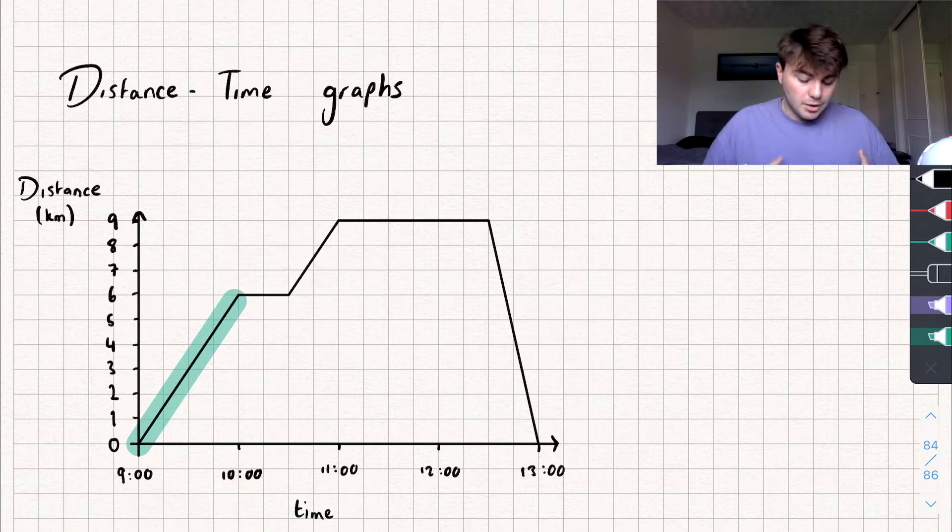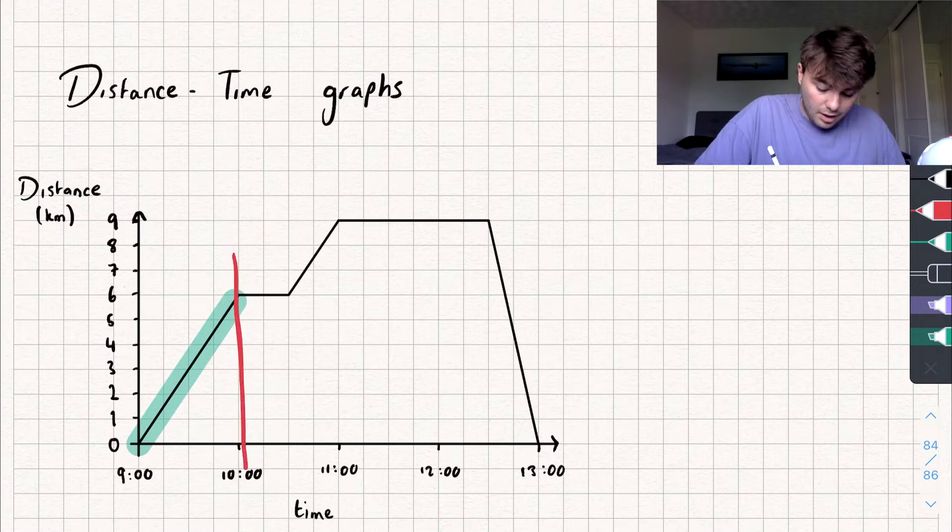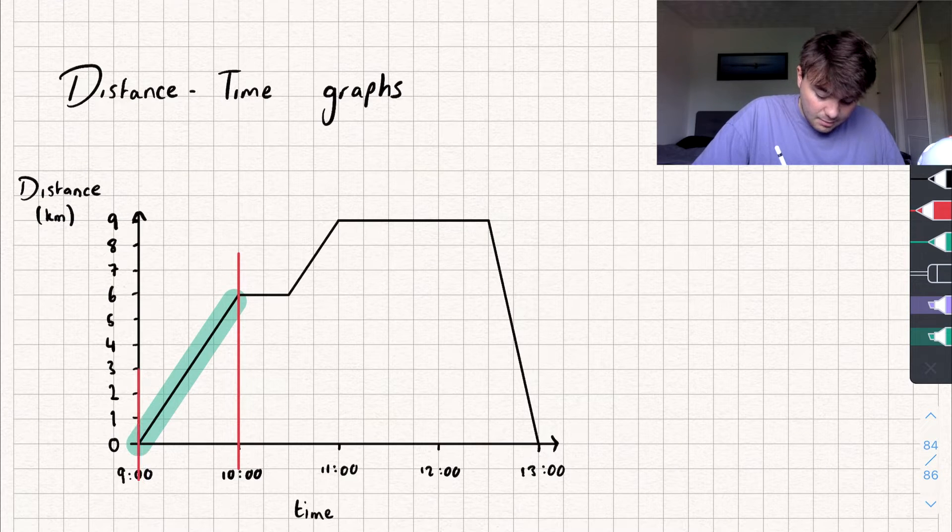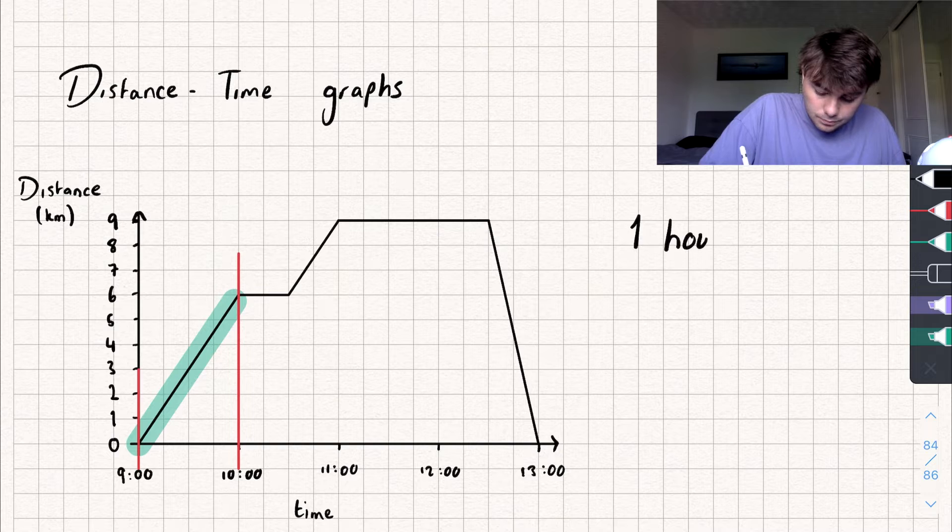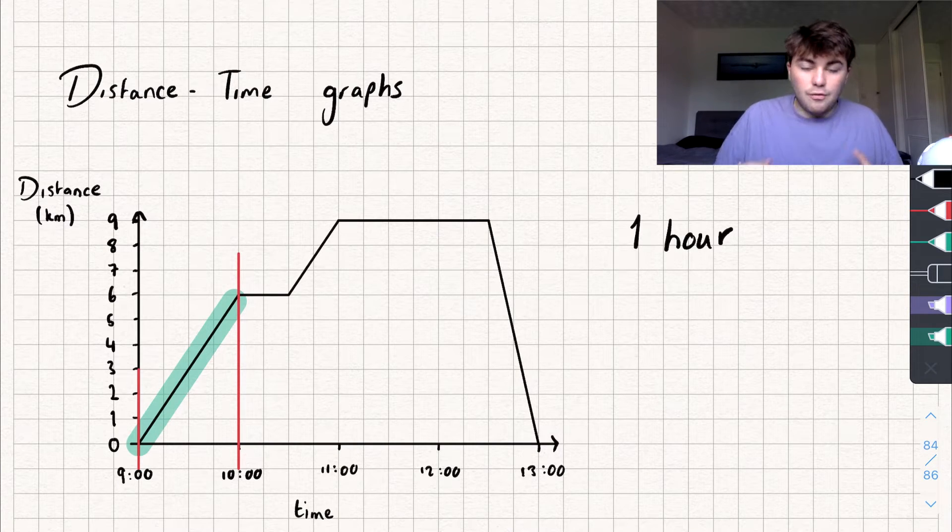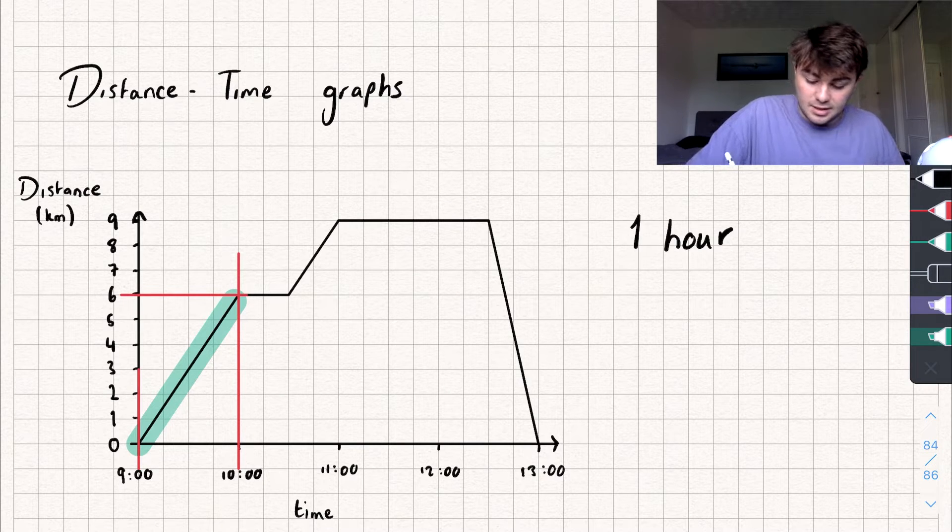How long was I traveling for? What's the difference in my x-axis? Between 9 and 10, I traveled for 1 hour. And what's the difference in my y-axis? In that 1 hour, I traveled 6km. We can see it there, 6km.